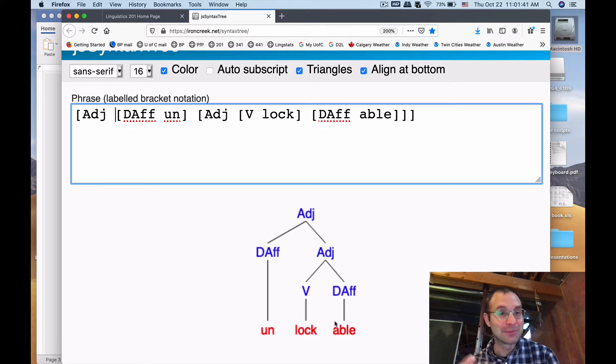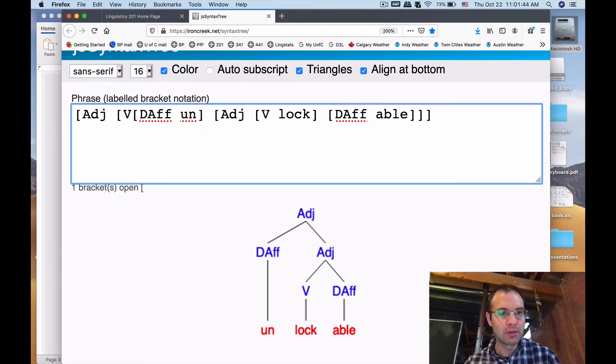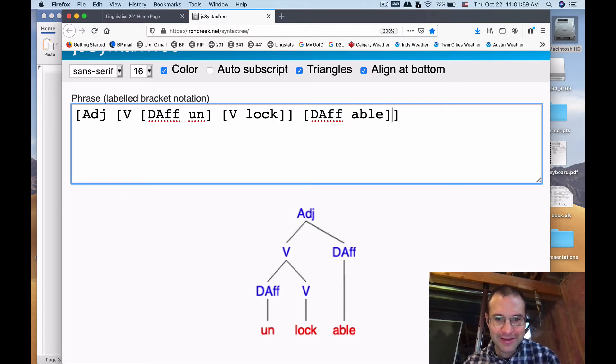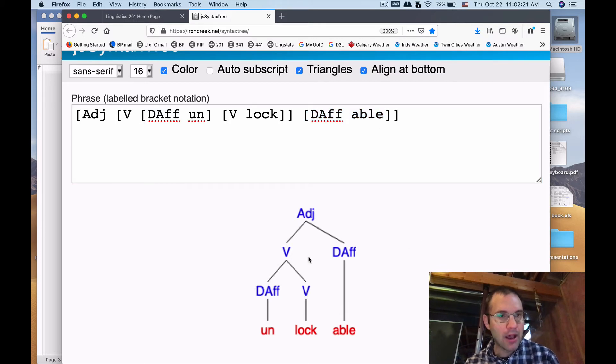The other interpretation is that it's something you can unlock. So let's create unlock as a verb first. For that, we're going to have to combine unlock together first, and then put another bracket over here so that the able attaches second. Now this is its own little sub bracketed off section of the word. Unlock gets created first, and then you can talk about something being unlockable as something you can unlock.